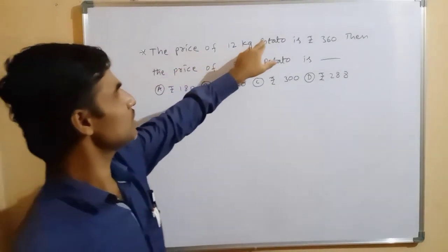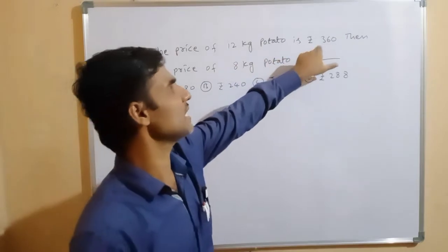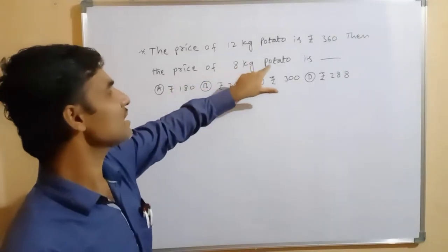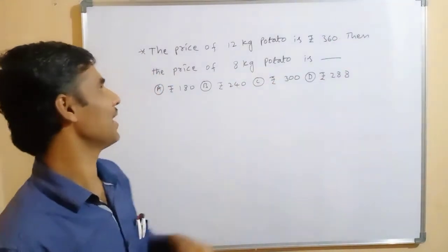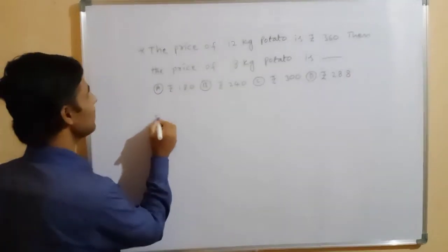The price of 12 kg potato is Rs. 360. Then the price of 8 kg potato is, we have to find. So, here what are they given here?